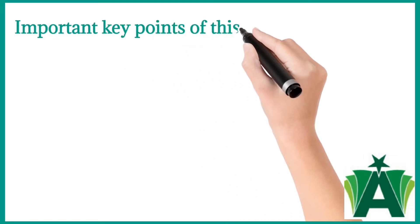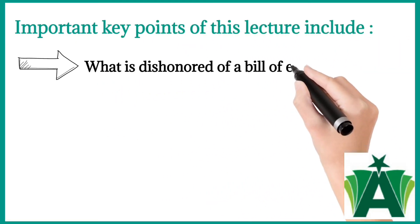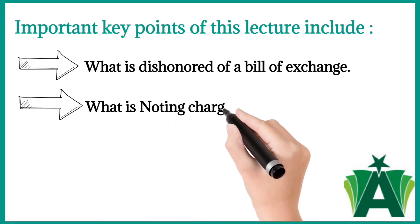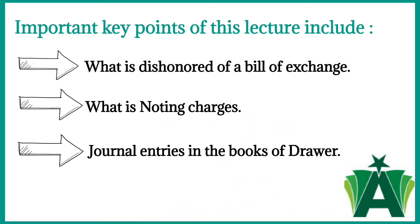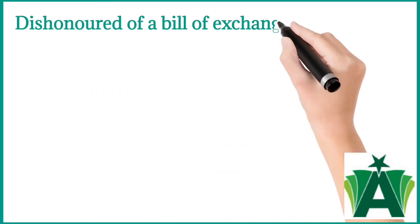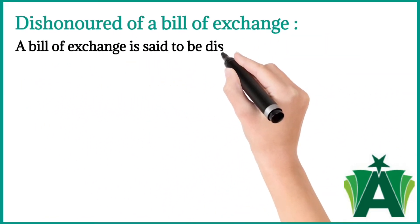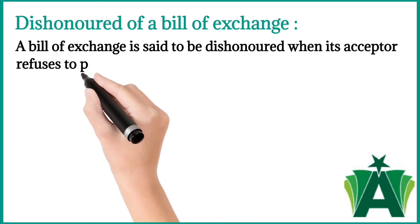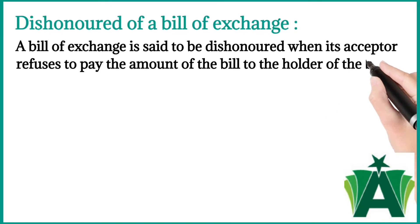Important key points of this lecture include: what is dishonored of a bill of exchange, and what are noting charges. A bill of exchange is said to be dishonored when its acceptor refuses to pay the amount of the bill to the holder of the bill on its maturity.